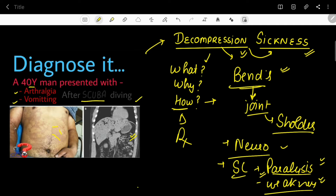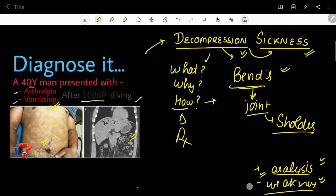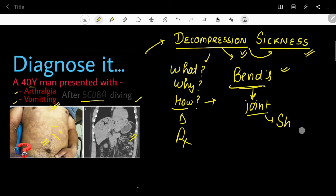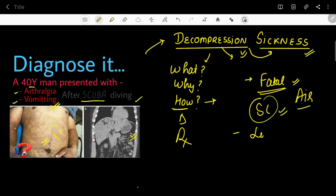Paralysis can remain permanent even after treatment. Skin mottling is another feature of this disease. The patient can also present with vomiting. 'Chokes' refer to pulmonary decompression sickness, where the main presentation is breathing difficulty. In severe cases, if a patent foramen ovale is present, bubbles can reach arterial circulation causing arterial air embolism, involving the brain, spinal cord, and lungs — making the disease potentially fatal.